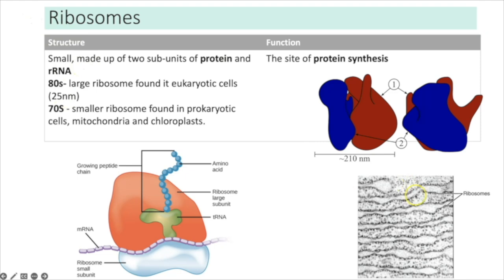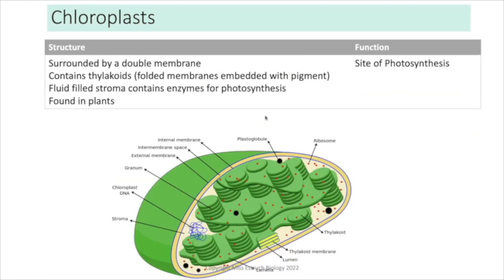Ribosomes are very small — they appear as tiny dots in microscope images. They are made up of two subunits of protein and RNA. There are 80S ribosomes — the larger type — found in the cytoplasm of eukaryotic cells, and 70S ribosomes — smaller — found in prokaryotic cells and also in mitochondria and chloroplasts of eukaryotes. Their function is as the site of protein synthesis.